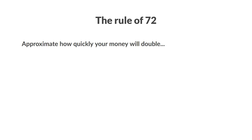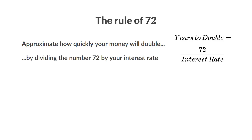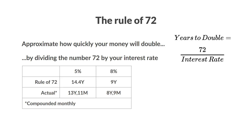There's a rule you can use to quickly approximate how fast your money will double, provided that you know the interest rate — it's known as the rule of 72. By dividing the number 72 by your interest rate, you will get an approximate number of years it takes for your money to double. For example, 72 divided by 5 is 14.4, meaning money will double in approximately 14.4 years if invested at 5% interest. I let my compounding spreadsheet compound a thousand dollars, and after 13 years and 11 months, it turned into $2,002.48 compounded monthly at 5% interest.